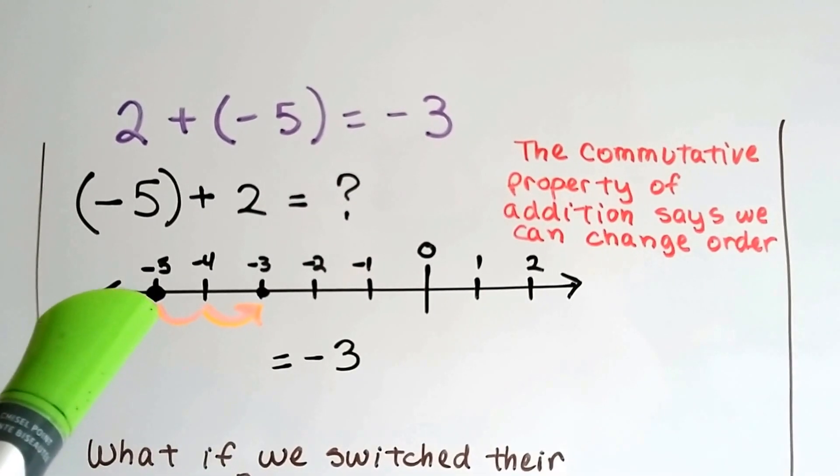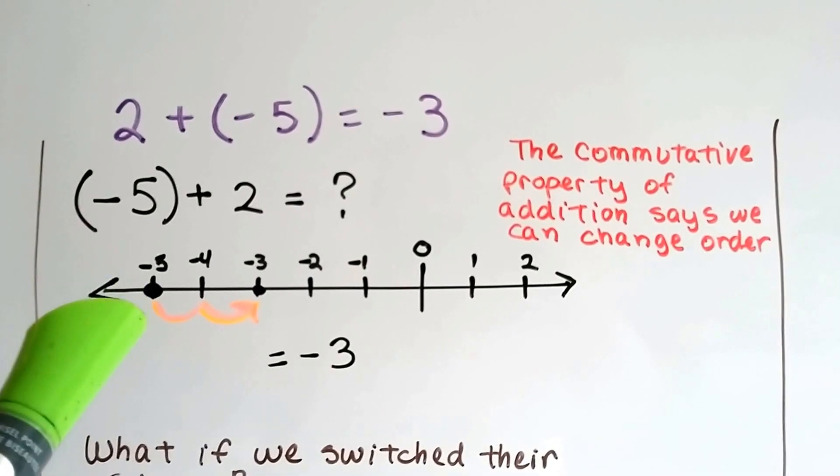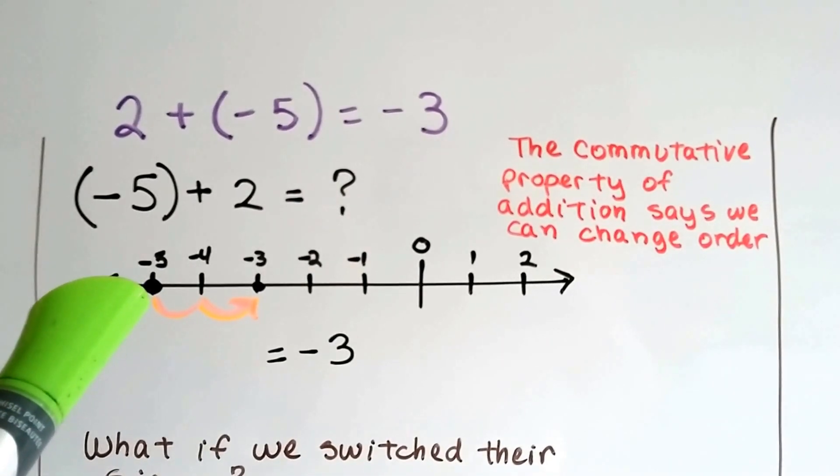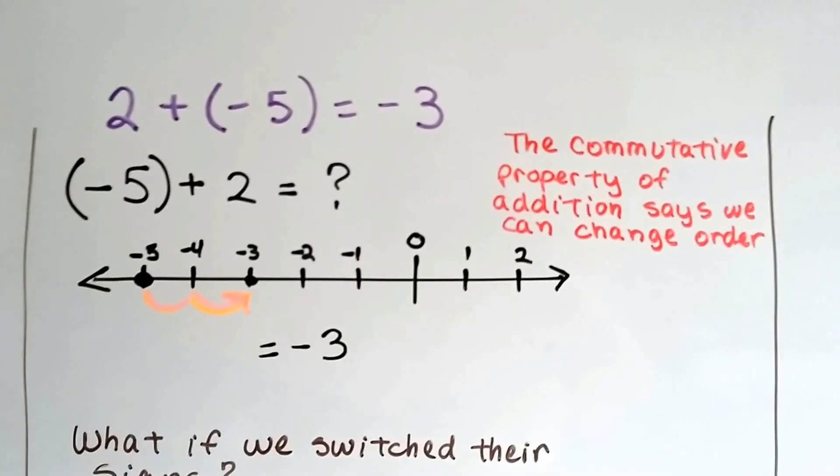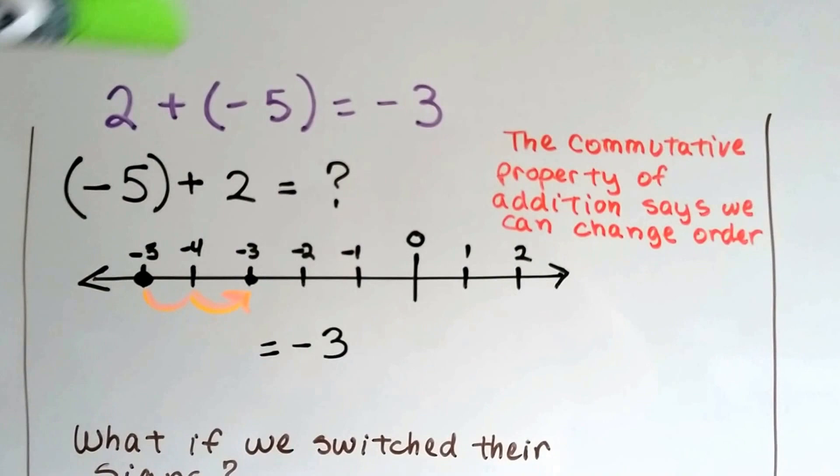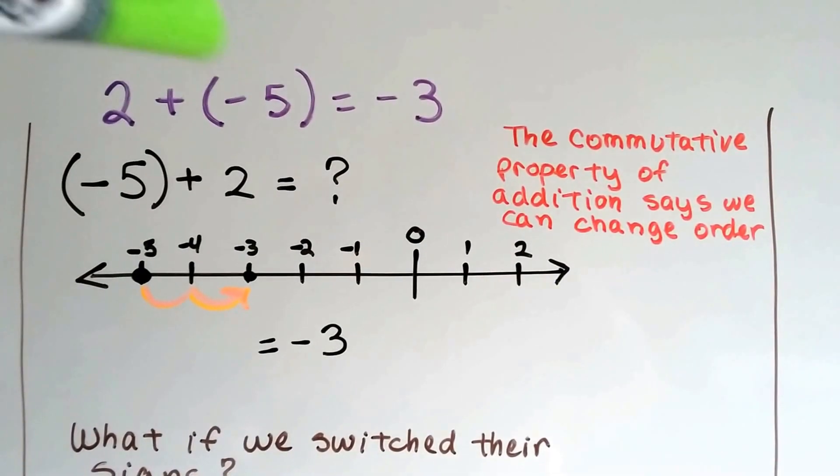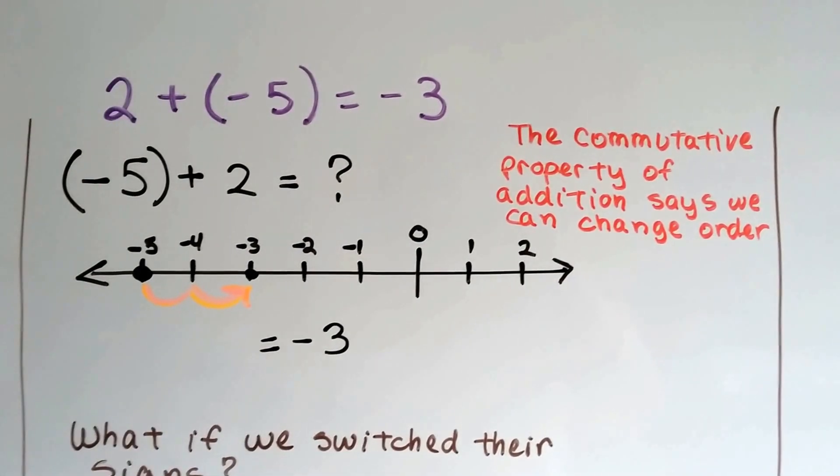If we're at negative 5 and we add 2, we're going to be here at the negative 5, and we're going to go up 2 towards the positive. 1, 2. It takes us to negative 3. We've got the same answer. The commutative property says it doesn't matter which order we add them.